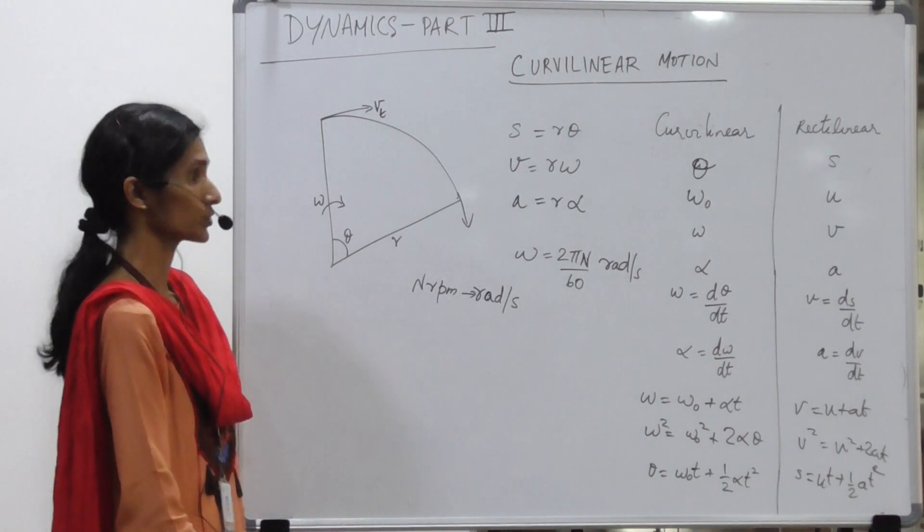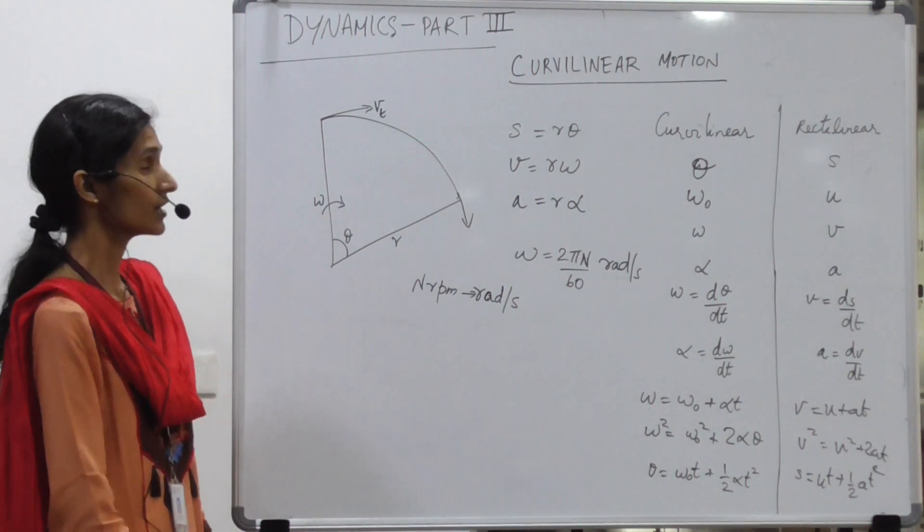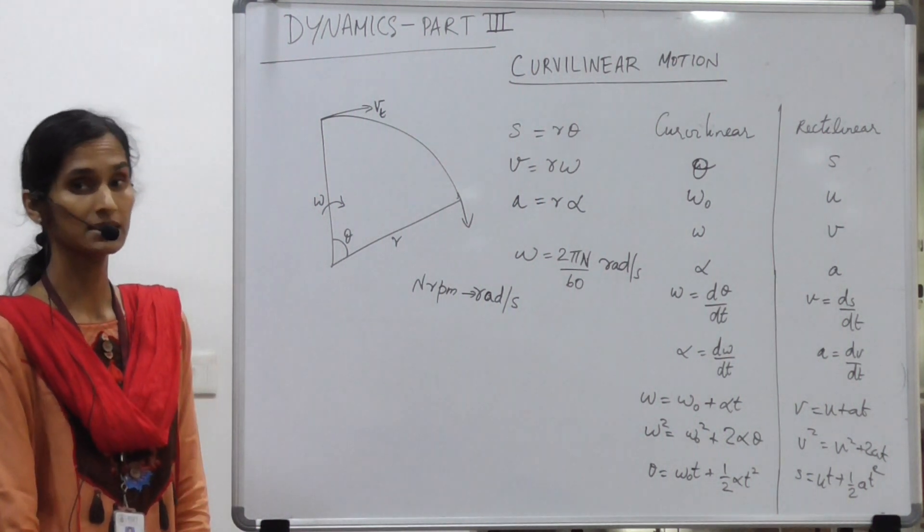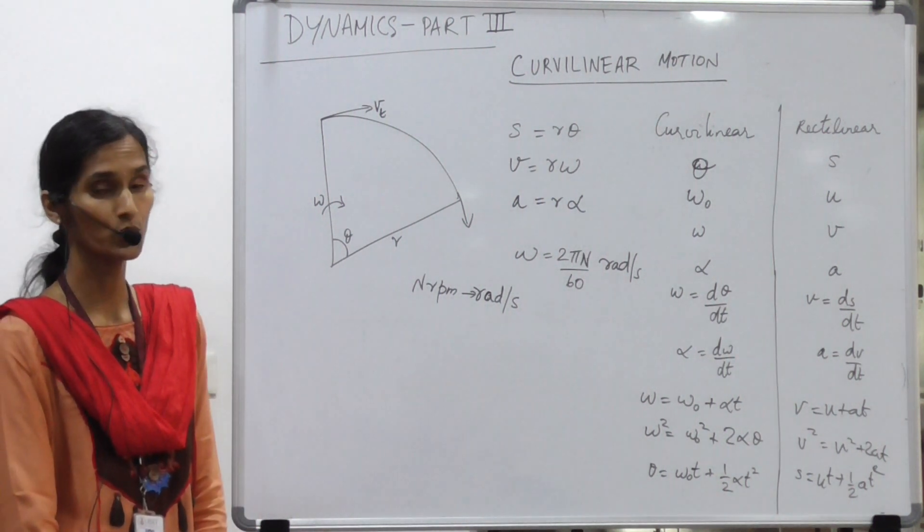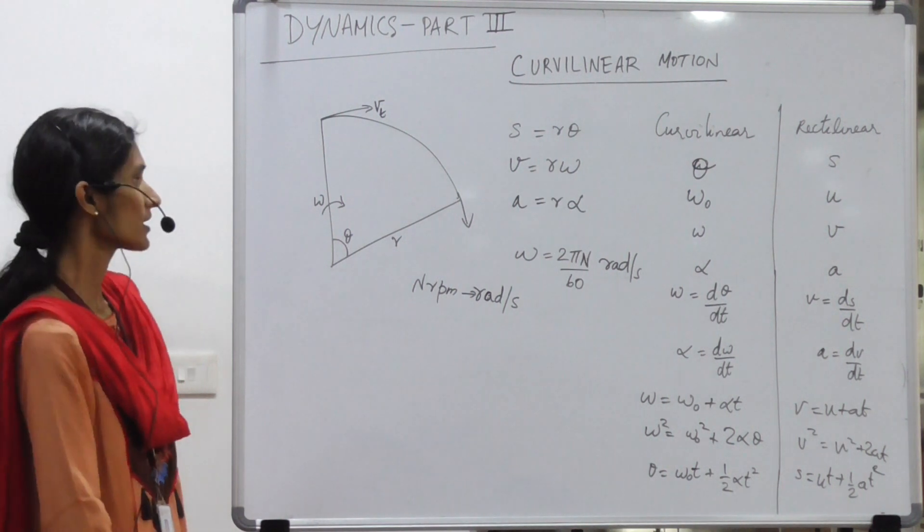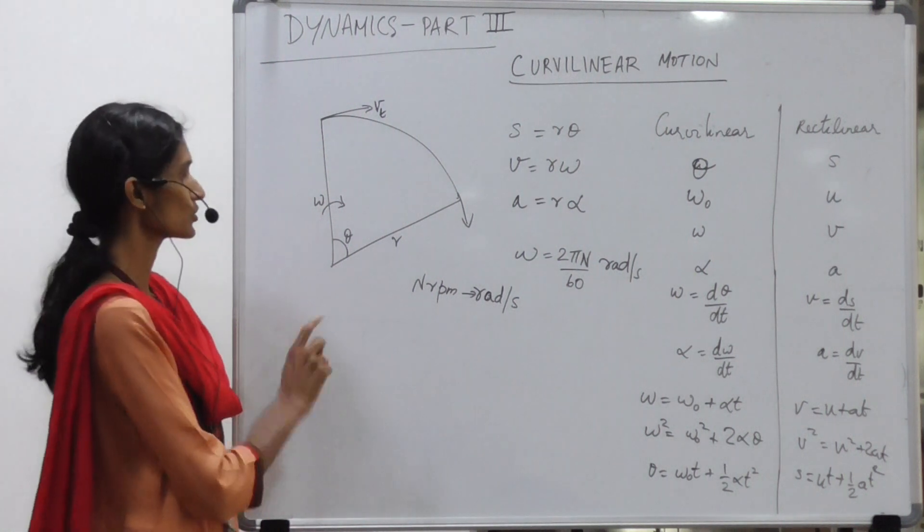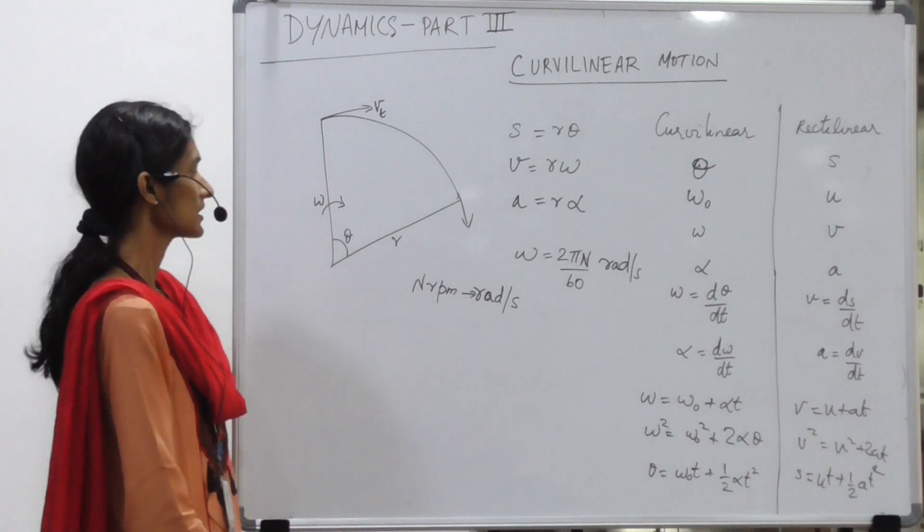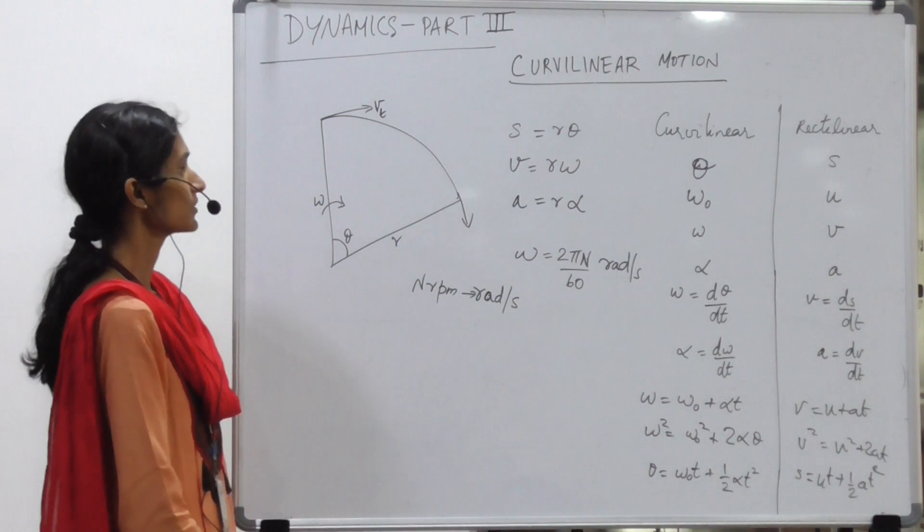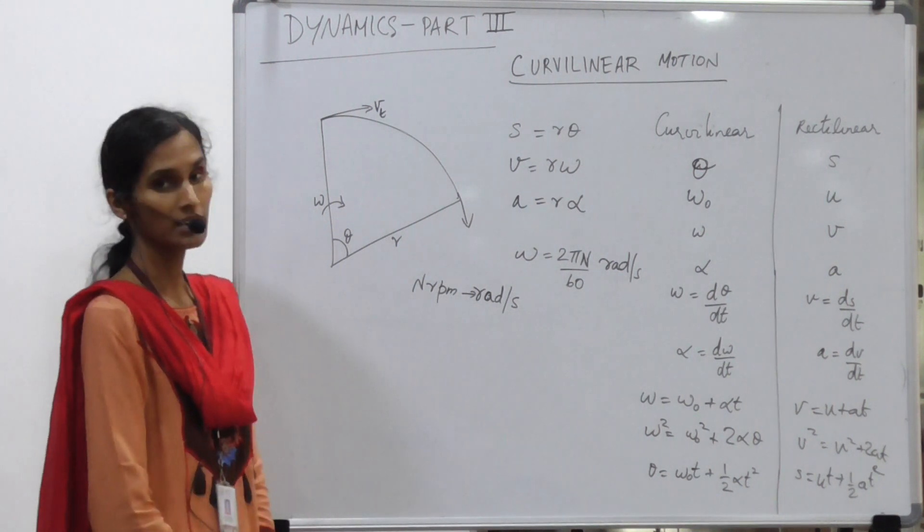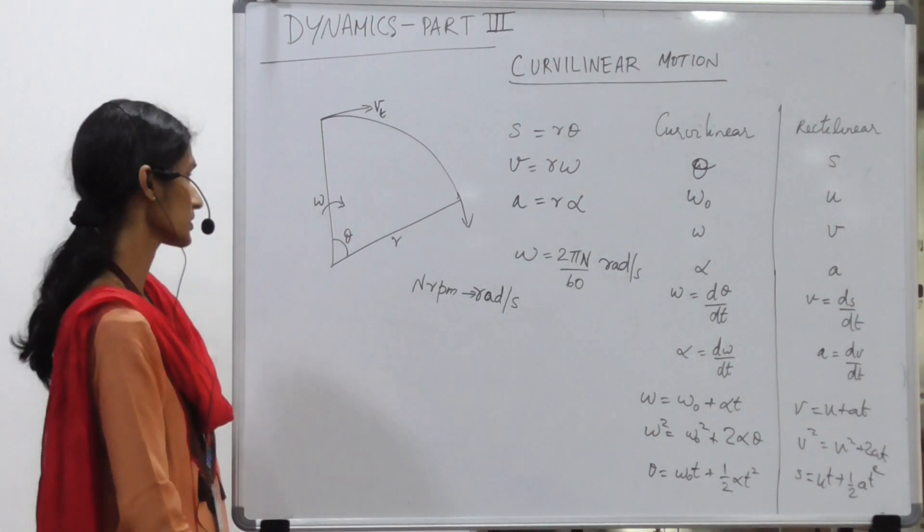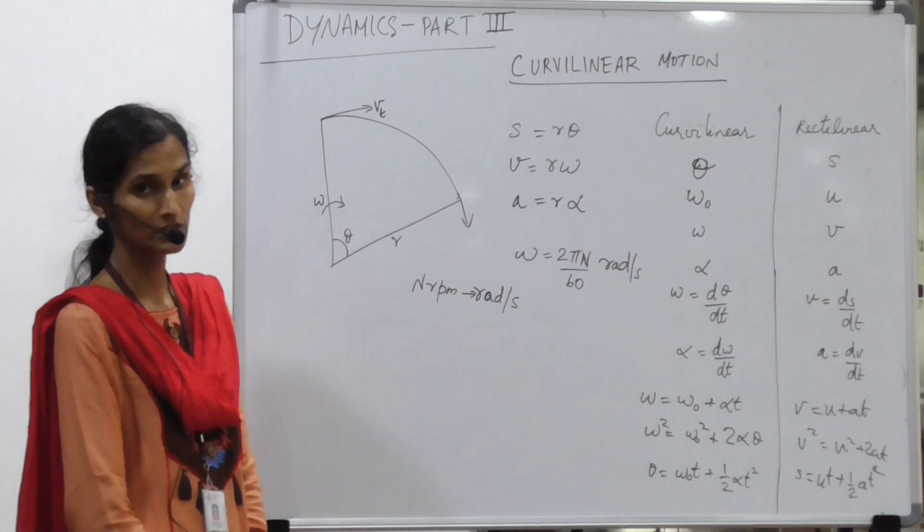Now where there is a curved motion, the velocity acts tangentially at any point on the curve. As you can see, there is an angular motion which passes through an angle theta with a radius of r, and the velocity with which it moves through the angle theta is denoted by omega, which is the angular velocity.